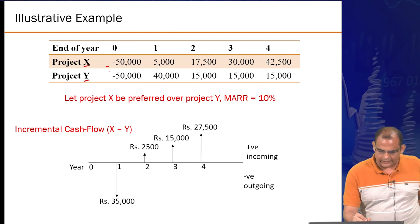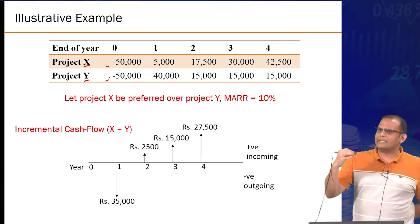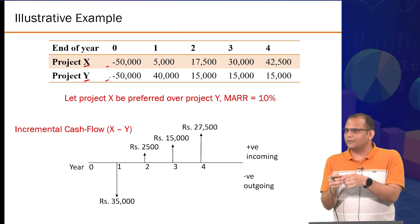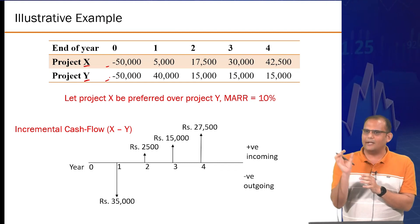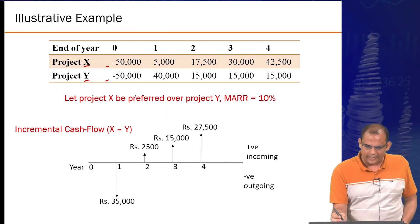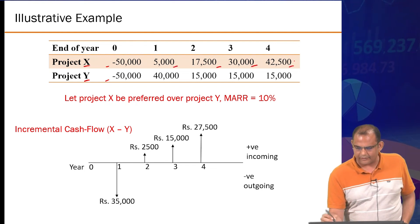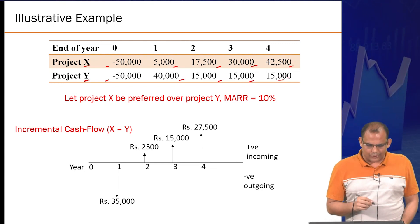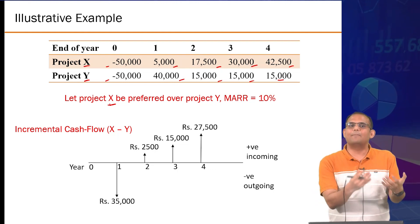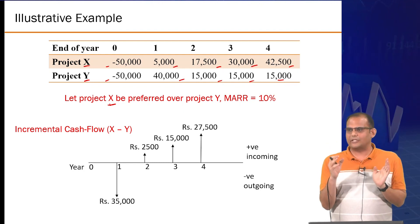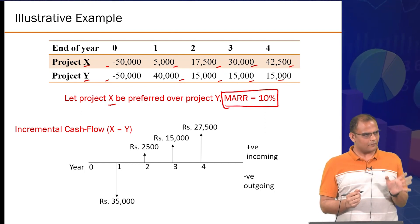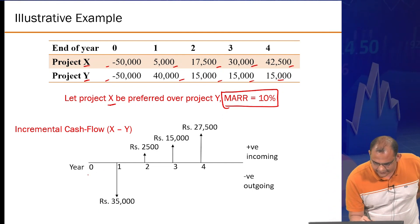Let's take a proper example: projects X and Y, both with the same initial cost of 50,000. X generates 5,000, 17,500, 13,000, and 42,000 in its cash flow series; Y generates a different series. The MARR is 10 percent. The net incremental cash flow series of X minus Y gives: year 0 net is zero, year 1 is 35,000 down, and years 2, 3, 4 have their respective net values.